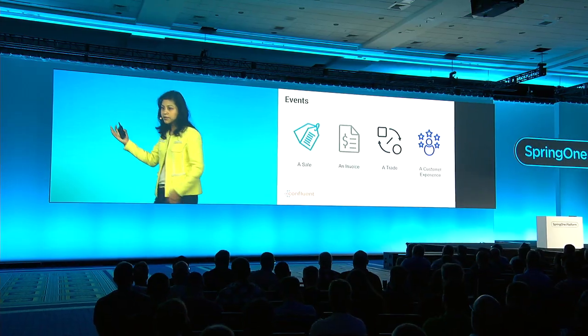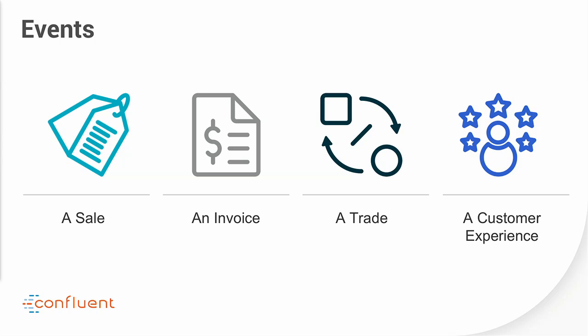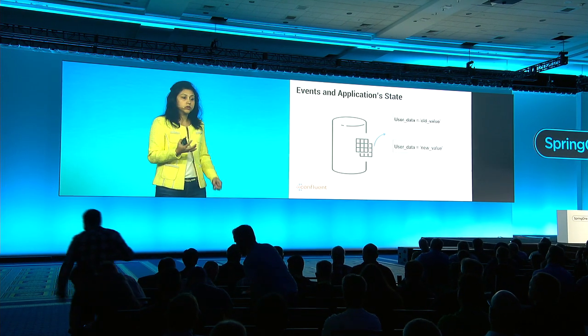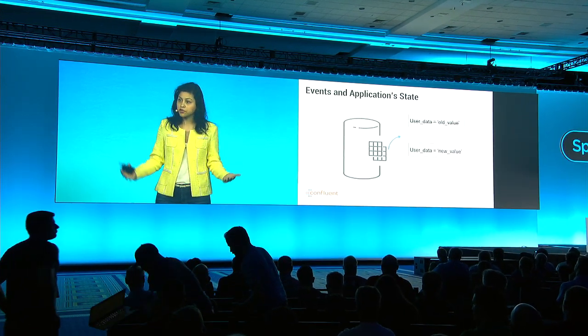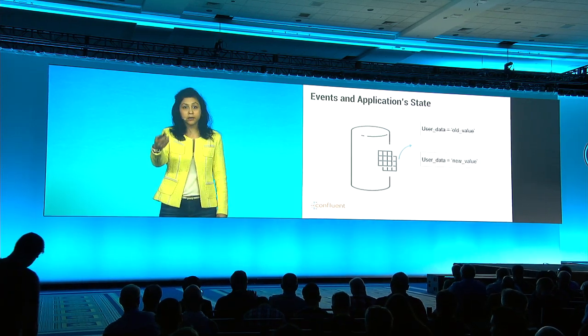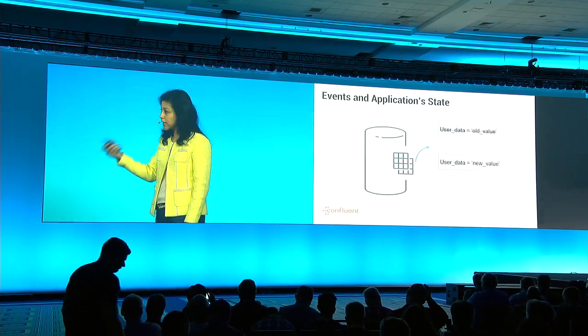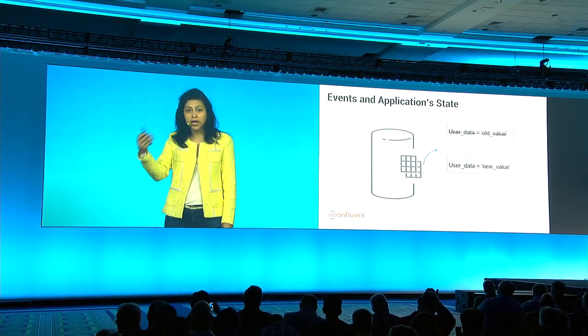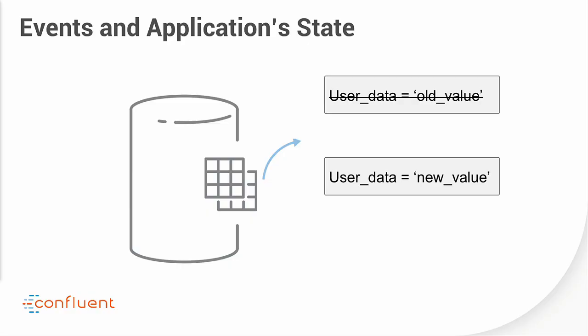Events don't just occur in retail — they occur everywhere. A sale, an invoice, a trade, some aspect of a customer experience — these are all events. But the world of events is actually much larger than this, and this is why they're so powerful. Events also capture changes in your application state. If your application stores state in a row in a database and you change that row, that's an event. Going from old value to new value, a change in state, is a very fundamental thing for application development in an event-driven world.